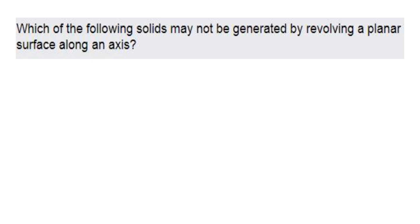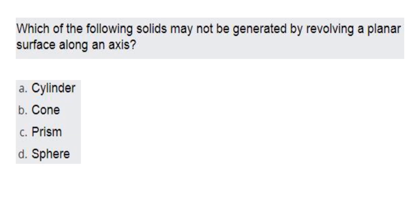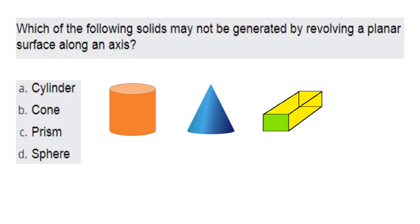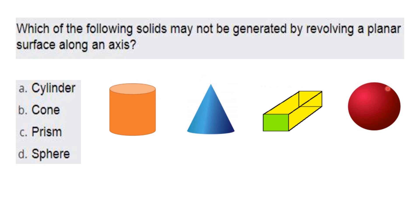The first question asks: which of the following solids may not be generated by revolving a planar surface along an axis? The options are cylinder, cone, prism, and sphere. Cylinder, cone, and sphere all have curved surfaces and can be generated by revolving a planar surface along an axis. The prism has no curved surfaces, so it is the odd one out. The correct answer is option C, prism.